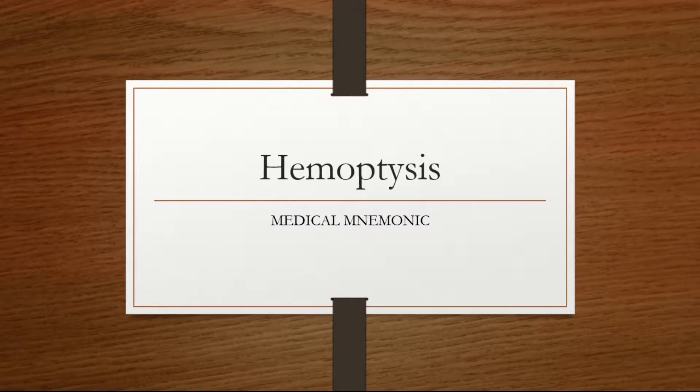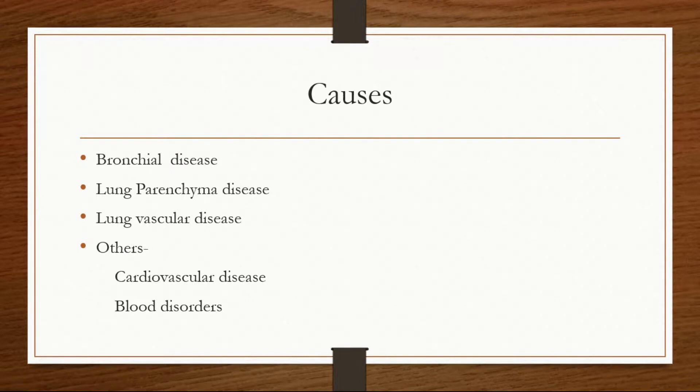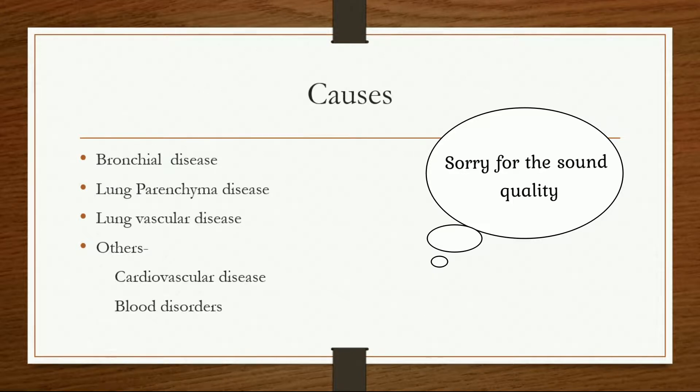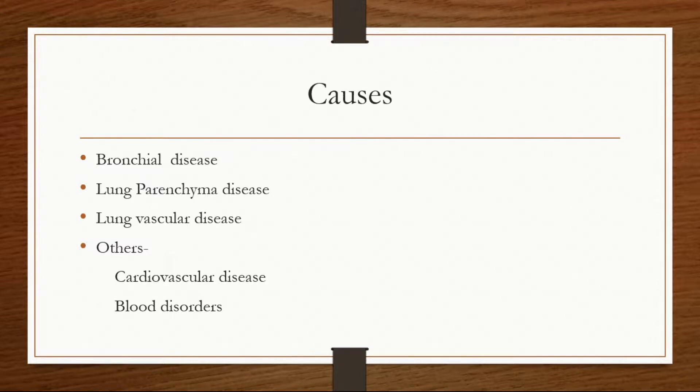Alright guys, let's learn about the causes of hemoptysis. The causes can be divided into the following headings: bronchial disease relating to the bronchus, lung parenchyma disease, and lung vascular disease relating to the vessels of the lung. These three almost cover the lower respiratory system. And others, we have cardiovascular disease and blood disorders.